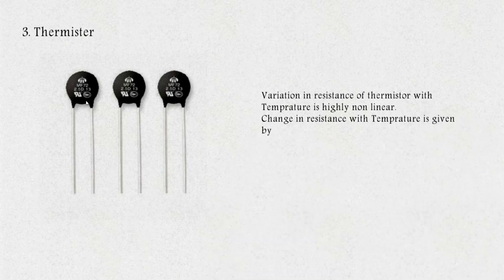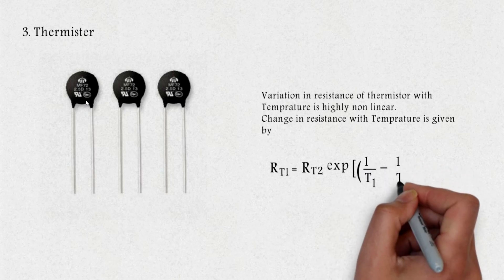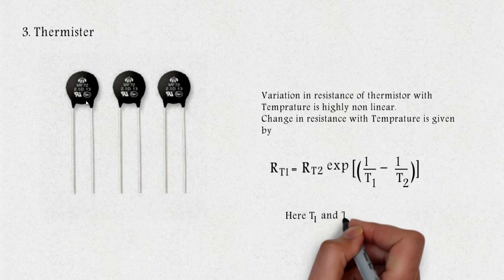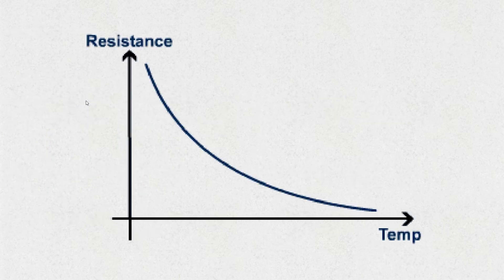Change in resistance with temperature is given by RT1 equals RT2 exponential to the power 1 by T1 minus 1 by T2 into beta. Here T1 and T2 are in Kelvin. The graph here shows the relation of resistance and temperature of a thermistor. A thermistor has a very high range than a RTD. Whereas the RTD varies up to a few hundred degrees Celsius, a thermistor can vary up to 10 to the power 7 degrees Celsius.